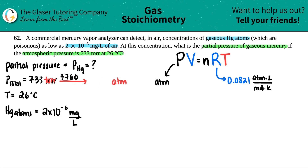733 divided by 760 — I'm not going to round here since this isn't the final answer — gives 0.96447 atm.